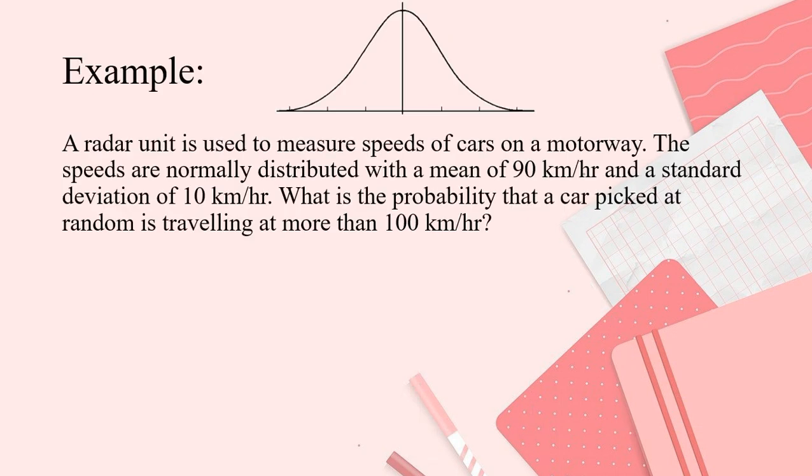Next. Another example. A radar unit is used to measure speeds of cars on a motorway. The speeds are normally distributed with the mean of 90 km per hour and a standard deviation of 10 km per hour. What is the probability that a car picked at random is traveling at more than 100 km per hour? So, again, what is step 1? We will place it on the curve and put the X-scores.